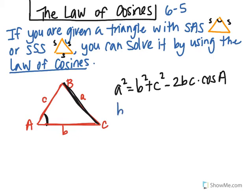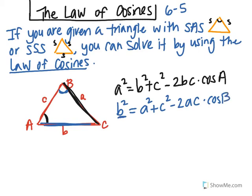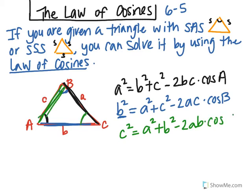If you want to find side b, you're going to use angle B in the formula. So b squared equals the other two sides squared: a squared plus c squared, minus twice a times c times cosine of angle B. And for side c: c squared equals a squared plus b squared minus twice a times b times cosine of angle C. So whichever side you're finding, you use the angle with the same letter.